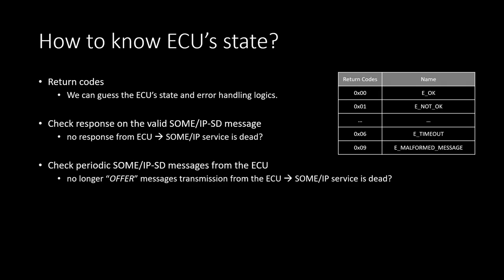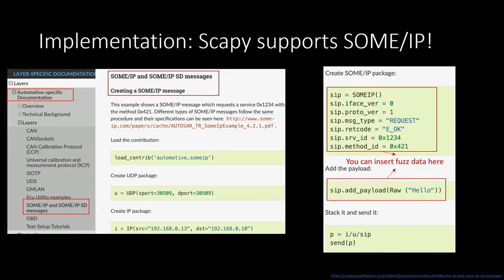To monitor the ECU state during fuzzing, we recommend three methods: first, check the return code in SOME/IP messages; second, send a valid message after fuzzing input — if there's no response, the SOME/IP service may have crashed; third, check whether the periodic SOME/IP-SD broadcast messages from the ECU are still being transmitted. For implementation, there are already SOME/IP Python libraries in Scapy, so you can easily implement SOME/IP fuzzing using Python.